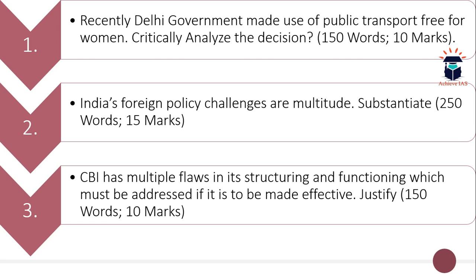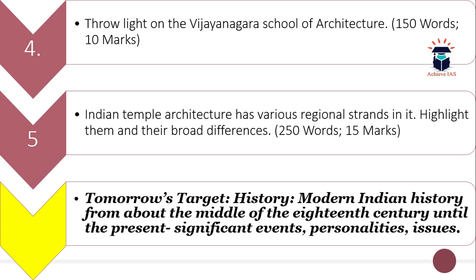These are the three questions from the current affairs perspective. The next two questions are from static topics. The topic of today is art and culture, specifically architecture. The fourth question is: throw light on the Vijayanagara school of architecture.